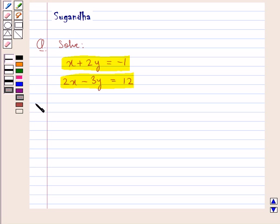Let's proceed with the solution now. We are given the simultaneous linear equations, x plus 2y is equal to minus 1 and 2x minus 3y is equal to 12. Let this be equation 1 and this be equation 2.